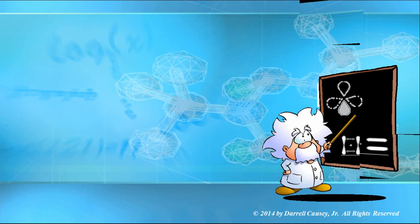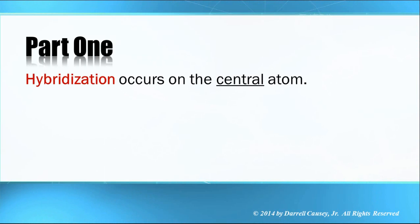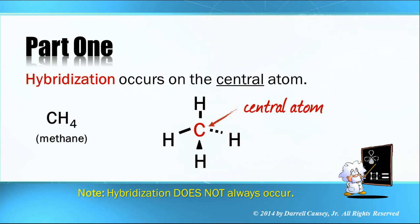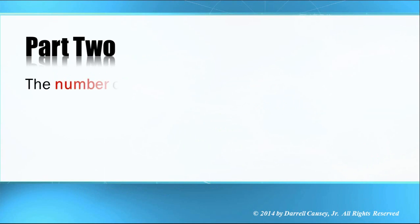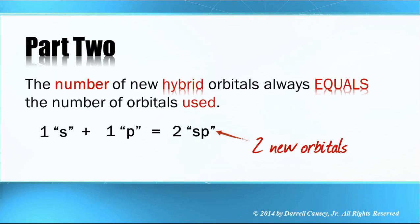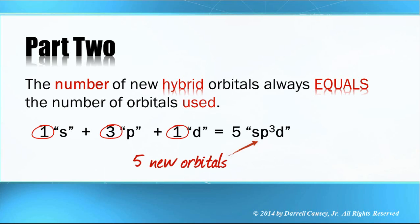Let's understand orbital hybridization. First, hybridization occurs on the central atom — so if we look at something like methane, carbon is the central atom, and that's where we expect hybridization to occur. Second, the number of new hybrid orbitals always equals the number of orbitals used. One s orbital and one p orbital gives us two sp orbitals. Or one s orbital, three p orbitals, and one d orbital gives us five sp³d orbitals.